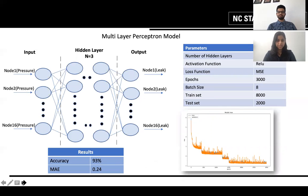Hi everyone, I'm Shreya Sabu and I'll be briefing you on the multi-layer perceptron model that's been used. To reiterate the key points, we have 16 pressure sensor values, 16 leak nodes and the architecture used is as follows. We have three hidden layers and several other hyperparameters have been set as shown to your right.